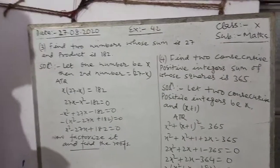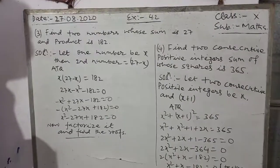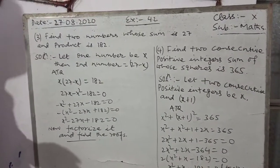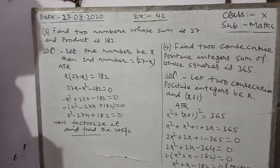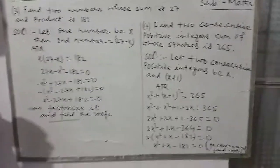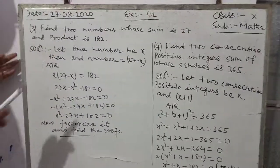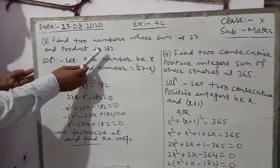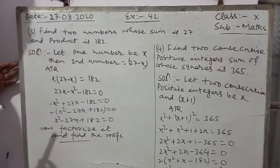Now, according to the question, the product of the two numbers is 182. So we set up: x multiplied by (27 minus x) equals 182.